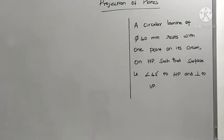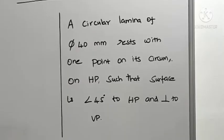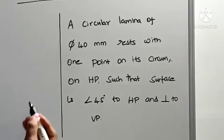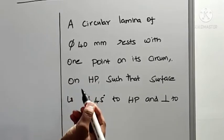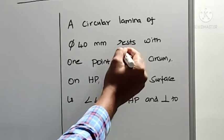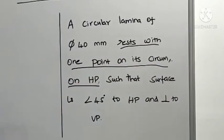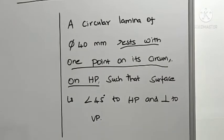Here, in this kind of problem, the condition is called the resting condition. For example, 'rests with one point on its circumference on the edge' — that is the resting condition. It means one of its points on the circumference should rest on the horizontal plane.